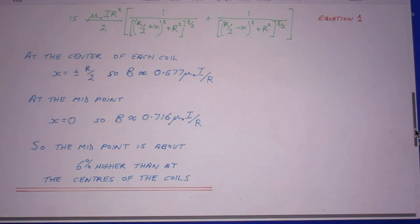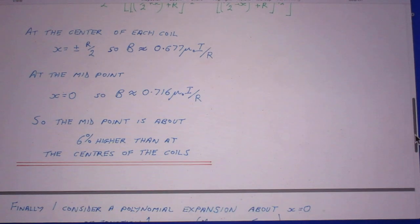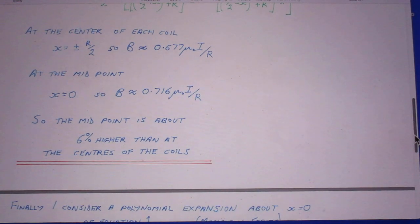If he puts in the values r/2 plus or minus, then he finds here 0.677 μ₀I/r.